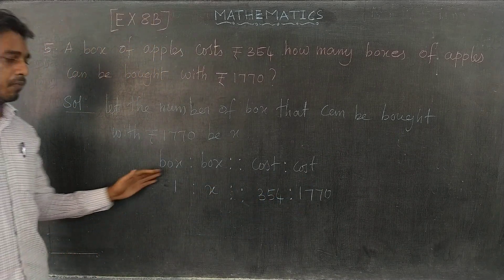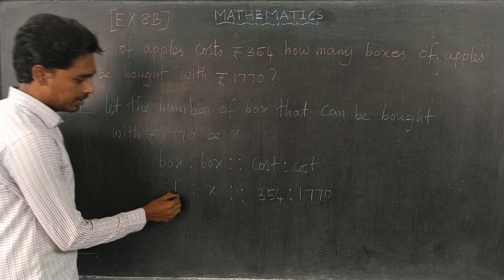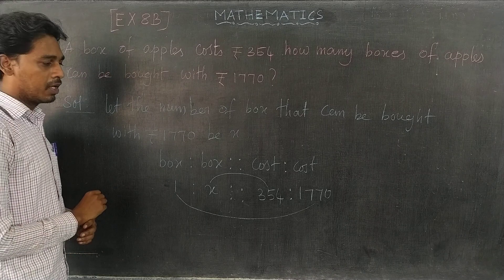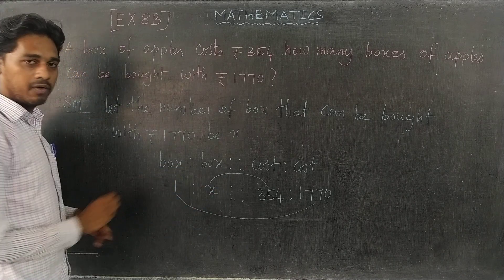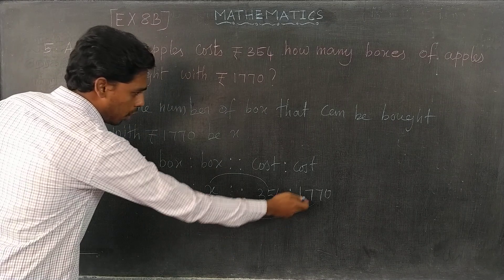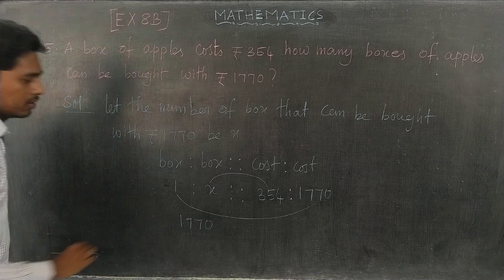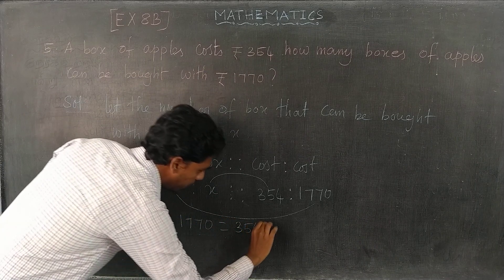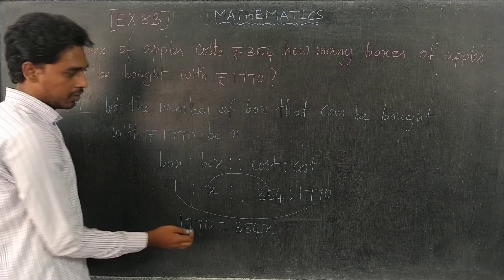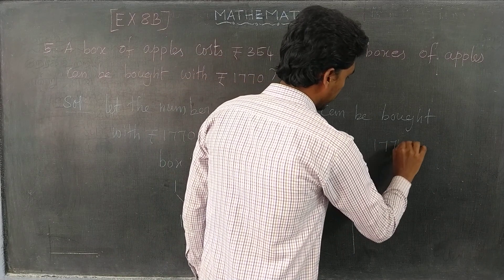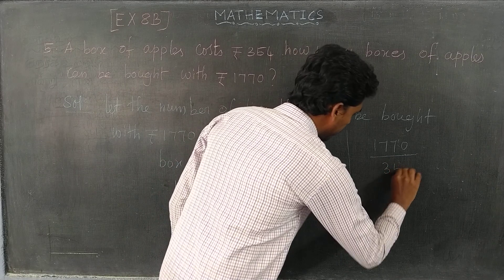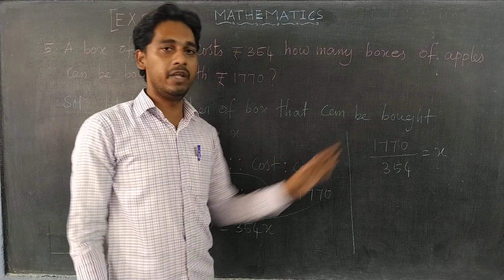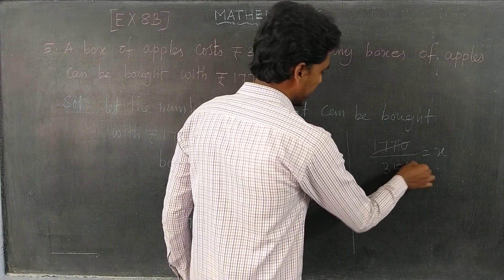So this is a proportion. Multiply: first term by last term, second term by third term. So x multiplied by 354 equals 354x. Therefore x equals 1770 divided by 354, which equals x.